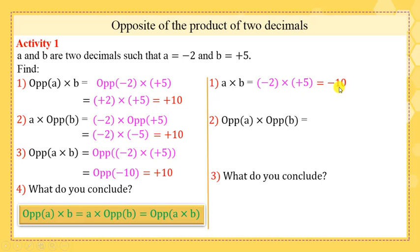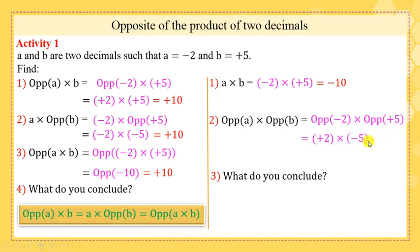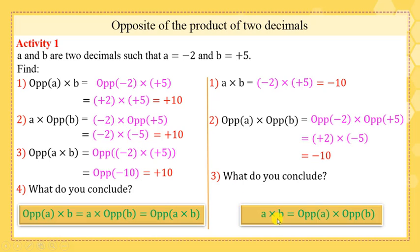Now, a × b = negative 2 × positive 5. Opposite signs, so the product is negative 10. And opposite of a × opposite of b = opposite of (negative 2) × opposite of (positive 5) = positive 2 × negative 5 = negative 10. What do you conclude? They have the same answer and are equal. So a × b = opposite of a × opposite of b. This is the second rule.